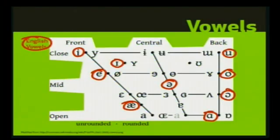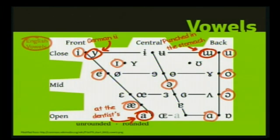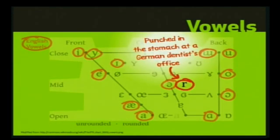The highlighted ones are the vowels that are in English. There are vowels in other languages that we don't have in English. For example, the German Ü — that's a front, close vowel we don't have in English. If you're punched in the stomach you might make a sound like Ö, and if you're at the dentist's office you might make a sound like Ä — neither of those are in English. Now, if you're punched in the stomach at a German dentist's office... ER is a very neutral vowel.